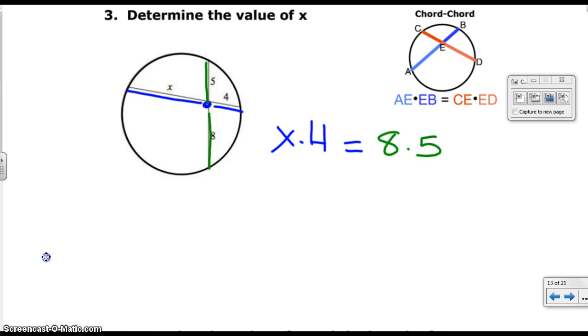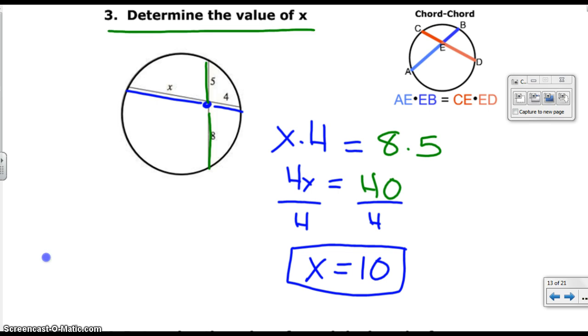We have x times 4 equals 8 times 5. And so we can write this. It'll be 4x equals 40. And so finally, this is an easy one for us. X is going to equal 10. And Siegel, are we done now with this problem? No. Am I right? No, you're wrong. Because all it says is determine the value of x. So don't do too much work. Make sure you read the question. Don't be like me. All right. Don't make the mistake that Siegel did.